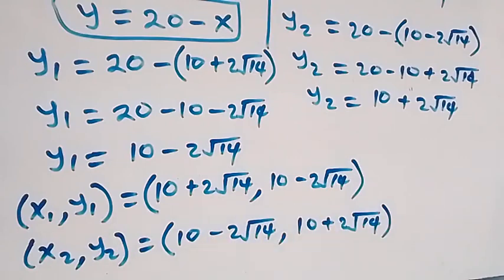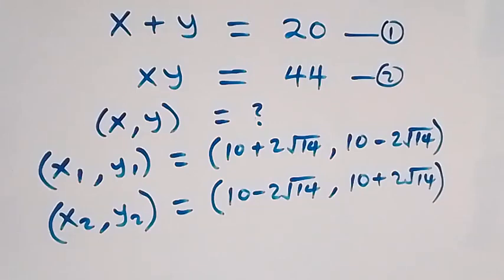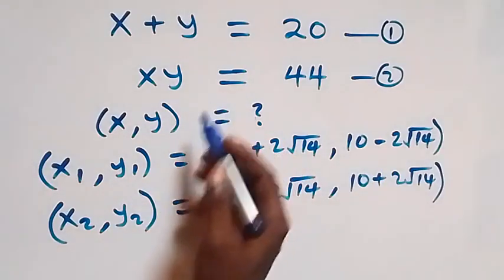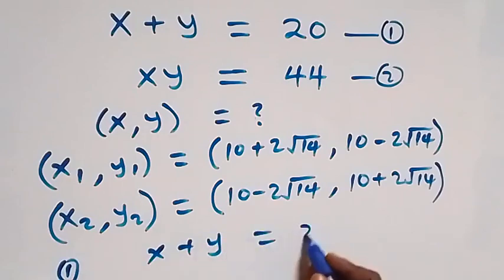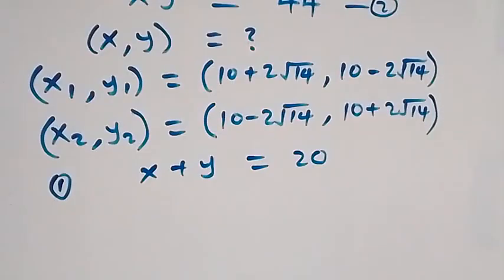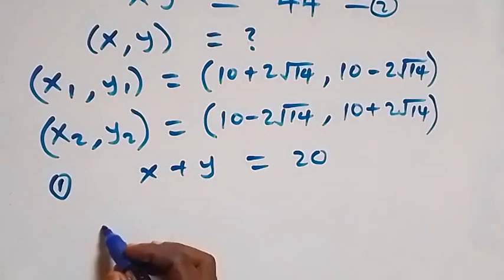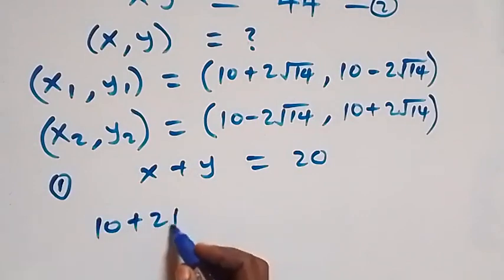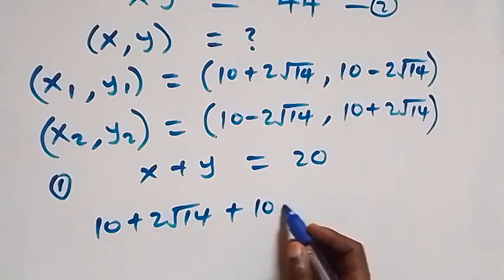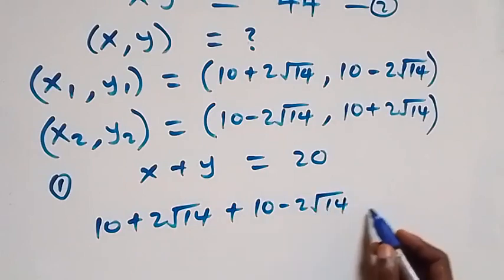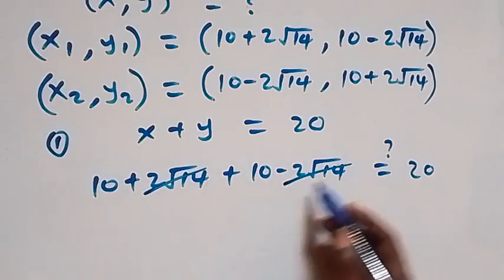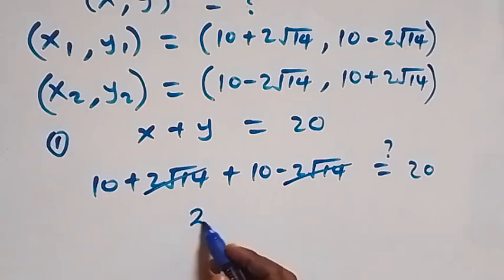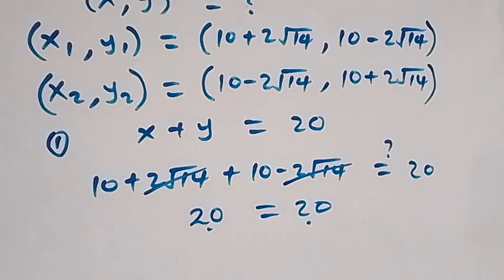Let's verify by substituting the first solution set into equation one, which is x plus y equals to 20. We have 10 plus 2 root 14, plus 10 minus 2 root 14. The plus 2 root 14 and minus 2 root 14 cancel each other, leaving 10 plus 10 which is 20. This equals 20, so the left hand side equals the right hand side.